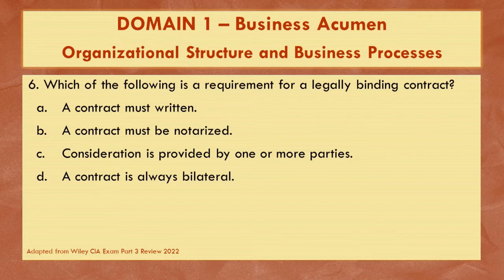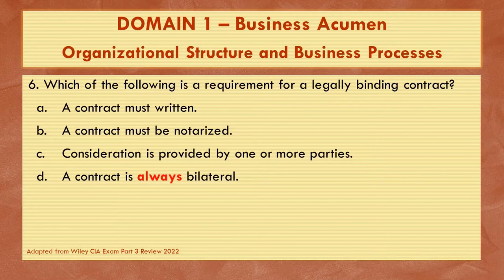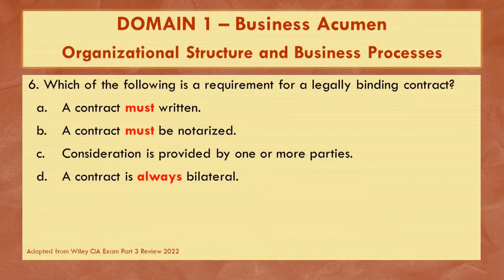Question six. Which of the following is a requirement for a legally binding contract? A, a contract must be written; B, a contract must be notarized; C, consideration is provided by one or more parties; or D, a contract is always bilateral. When taking your exam, be careful of trick words like 'always' in option D — that should prompt you to ask whether contracts really always have to be bilateral, or if they can be unilateral or have more than two parties.